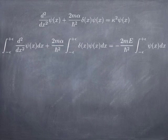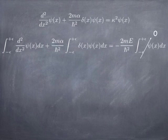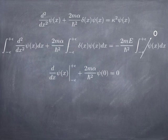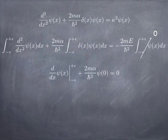Notice that the second derivative integrated gives you the first derivative. The delta function integrated just gives you the wave function evaluated at the origin. And the wave function integrated over a tiny distance gives you nothing, because we're going to let epsilon go to zero in the end, or become nearly zero.